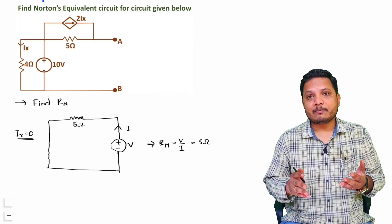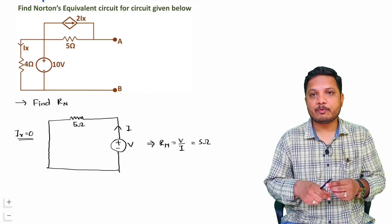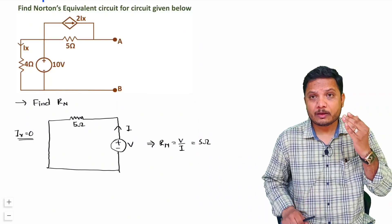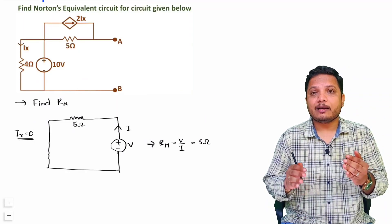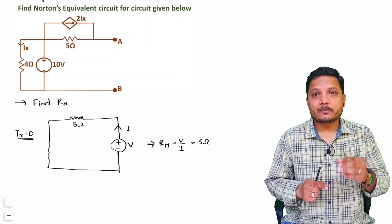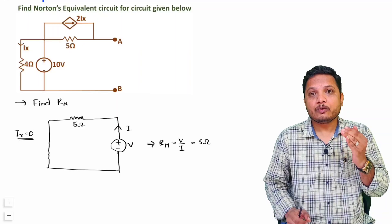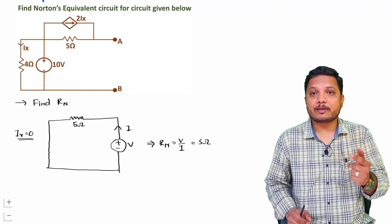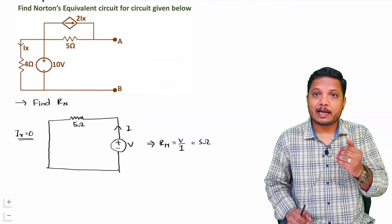So by a single step we get Rn = 5Ω. Sometimes this may seem tricky, but with the basic idea you can easily solve these questions. Now the second step is to identify the equivalent Norton current IN. Norton's equivalent circuit is Rn in parallel with an equivalent current source. The equivalent current IN is the current passing through the short-circuited load. So I need to short the load terminals AB and find the current passing through them.